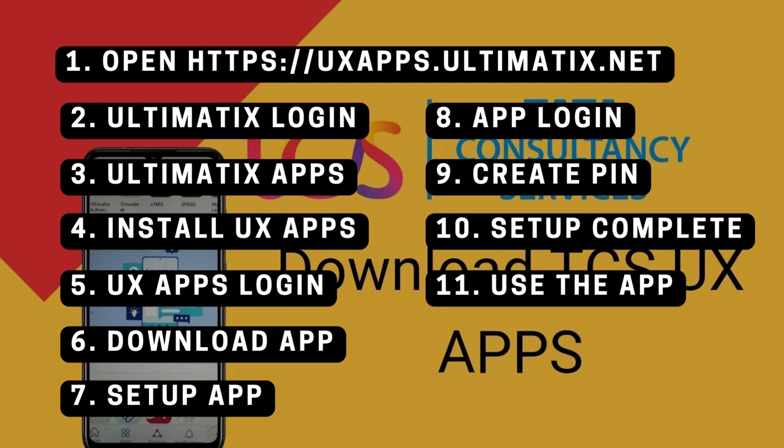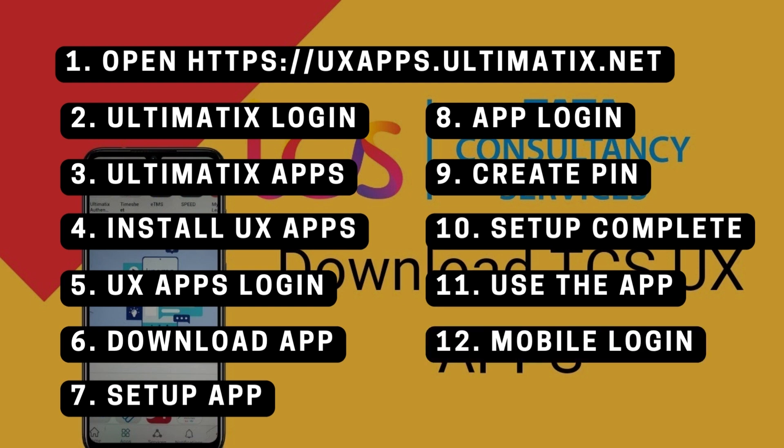Step 11: Use the app — click on Generate Auth Code. Step 12: Mobile Login — copy the auth code from the app, open www.ultimatics.net in a browser and paste the auth code.